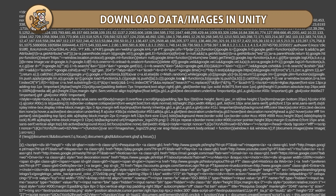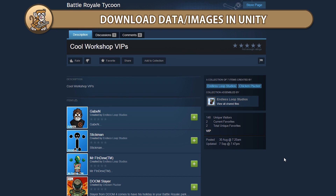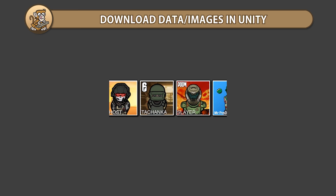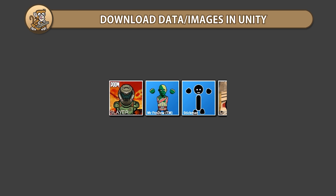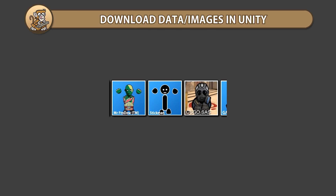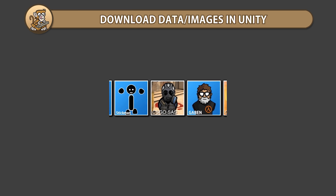In this video we're going to learn how we can download data from inside Unity. This way you can add some really cool stuff to your games, like a Workshop Showcase widget that grabs data from the Steam Workshop and displays it in your game.